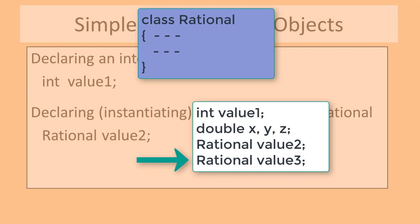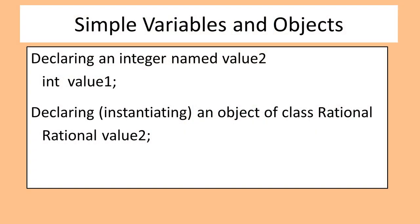Multiple objects can be instantiated from a single class definition. If I want to declare an integer and name it value1, I enter: int value1; At this point, value1 is assigned enough memory to hold an integer. If a class definition is already defined for rational, I can instantiate an object of type rational named value2 by entering: rational value2; Now value2 is assigned enough memory to hold a rational object and all available rational operations.